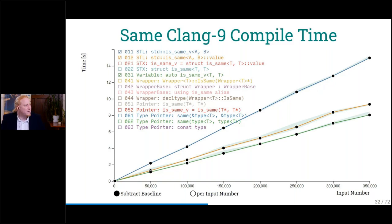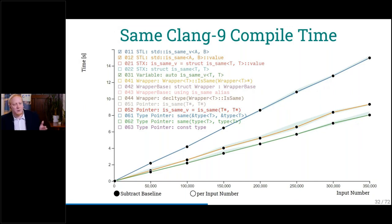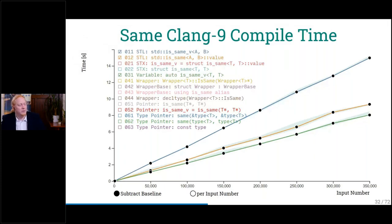The x-axis is the input number, and this test uses the amount of `is_same` comparisons that are done. When we are at 350,000 in the last column, we are doing 350,000 `is_same` comparisons. I don't create 350,000 types — I create fewer of them but take a total of 350,000 comparisons. That's why we get linear graphs here. If we divide by the input number, we see it's the same for everybody — this is actually the time it takes to compare one type to another.